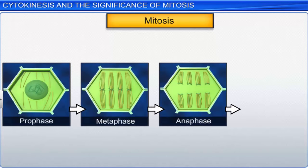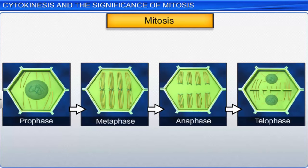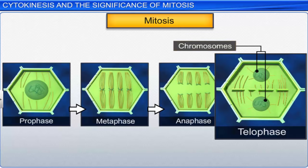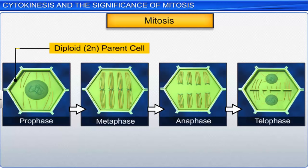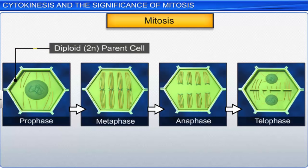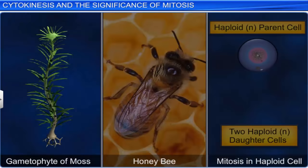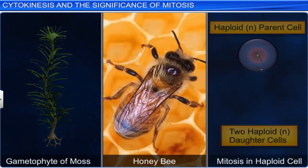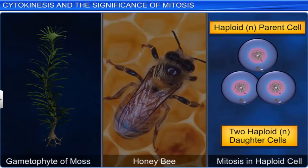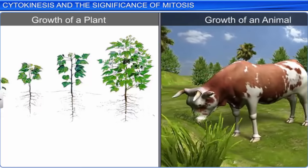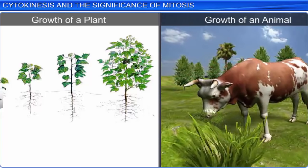Mitosis is one of the most important cellular processes. It is also called equational division, as the daughter cells inherited the same diploid number of chromosomes as in the mother cell. It is generally seen in diploid cells. However, in certain lower plants like bryophytes and social insects like honeybees, mitosis occurs in haploid cells. Mitosis, or mitotic division in somatic cells, is responsible for the growth of multicellular organisms.